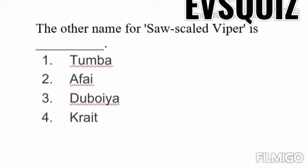The other name of short scaled viper is: option one: tumba. Option two: five. Option three: dopia. Option four: crate. If you saw the video classes of the snake charmer story, all the classes, very properly, you will be able to give the answer very nicely. Students, what is the other name for short scaled viper? Which option is correct? Think out students.